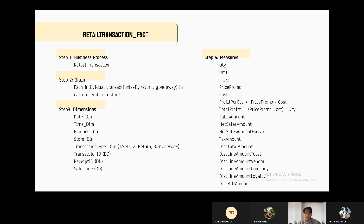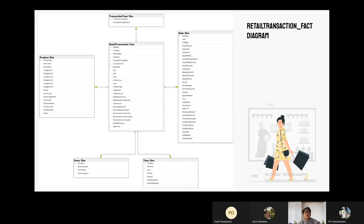In the last step, measure: we keep everything from the sale transaction table received from DPMS and add two measures, which are profit per quantity and total profit. Profit per quantity is the profit per one unit, calculated by subtracting price promo and cost. Total profit is profit per quantity multiplied by quantity, in case some transactions have multiple quantity. Here is the diagram of the retail transaction fact.